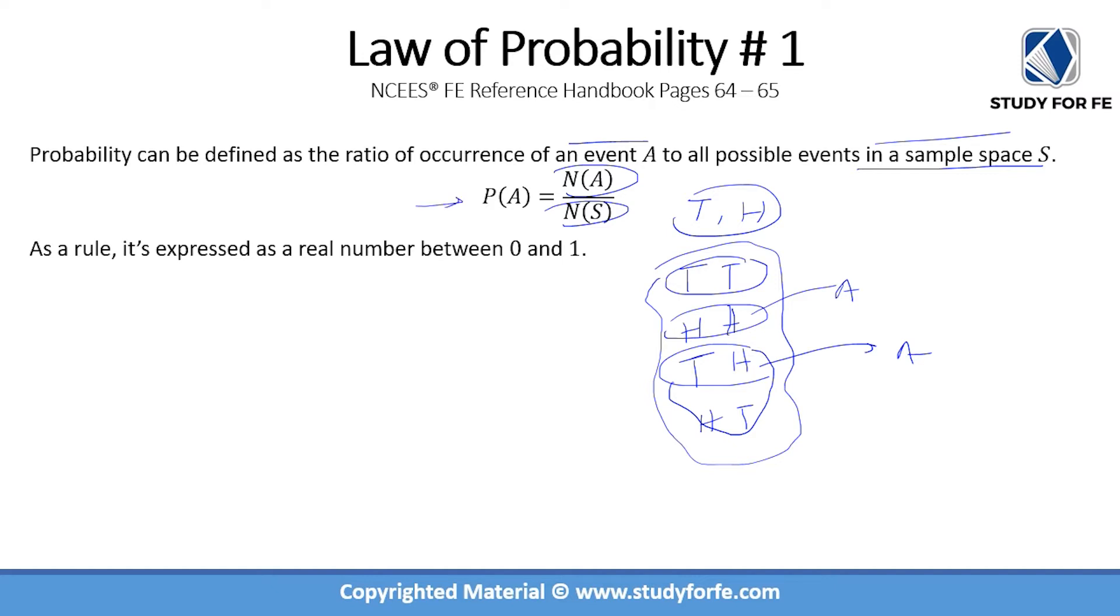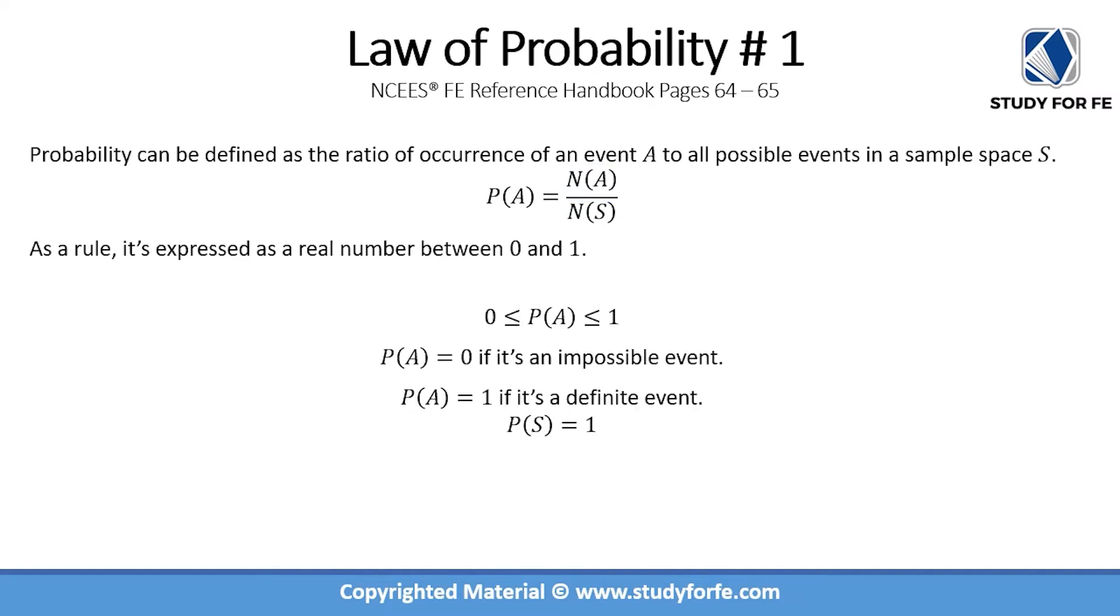As a rule, probability is expressed as a real number between zero and one. So the minimum value of probability is equal to zero and the maximum value of probability of a given event is equal to one. If the probability of A is equal to zero, it basically means that it is an impossible event.